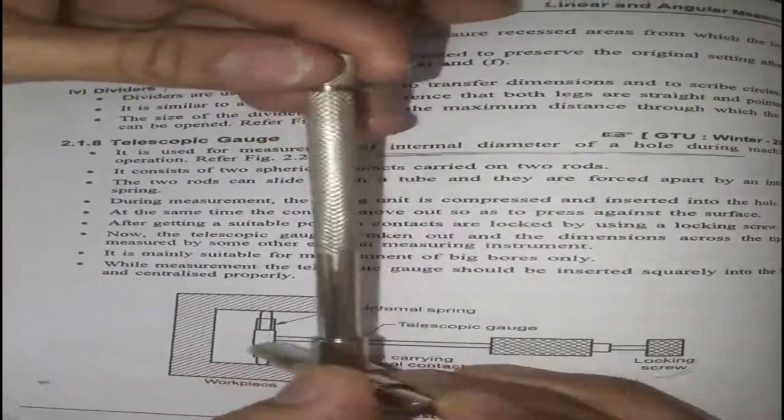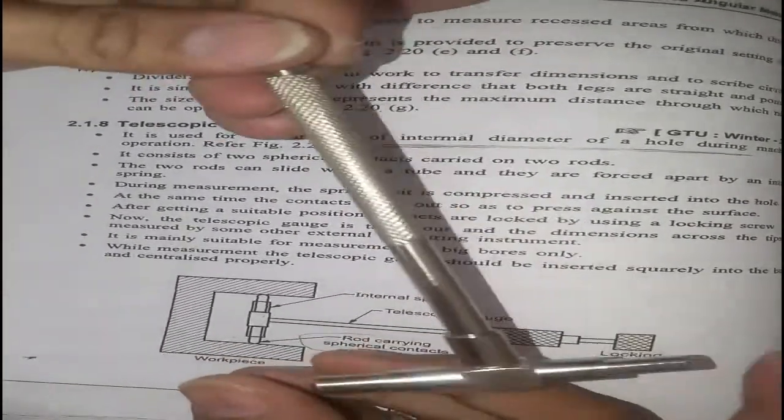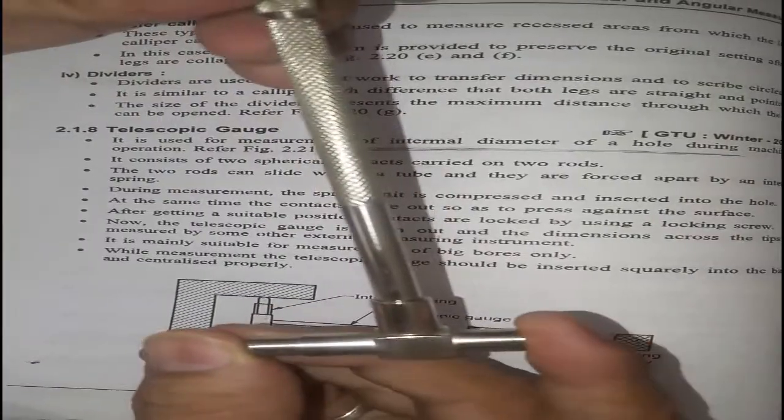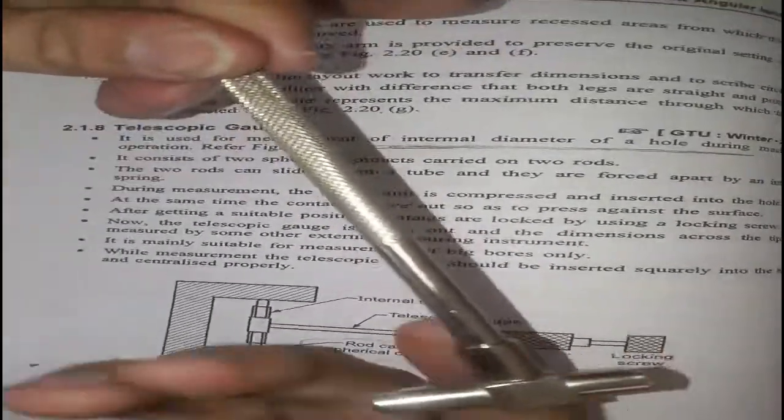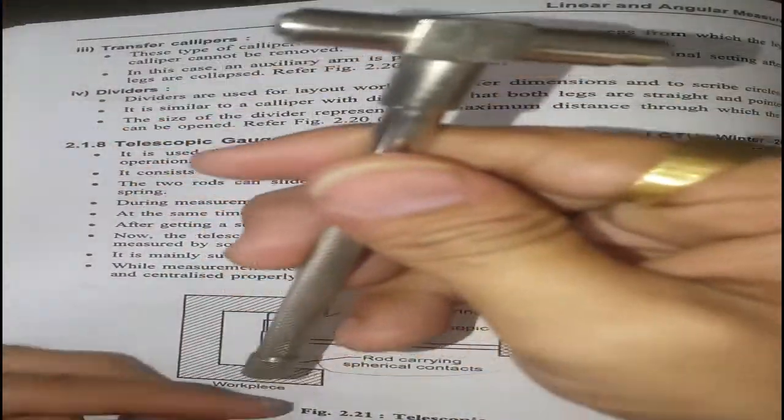It is a very efficient tool for measuring the inside diameter of cylinders.